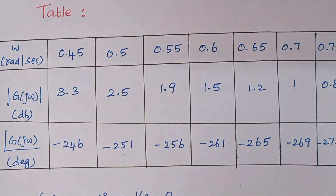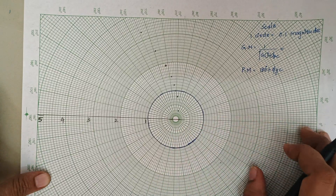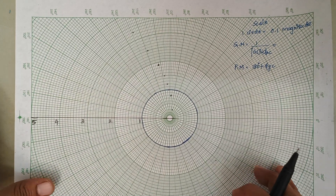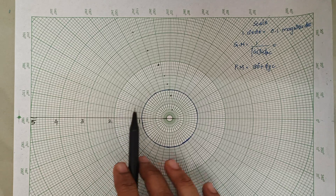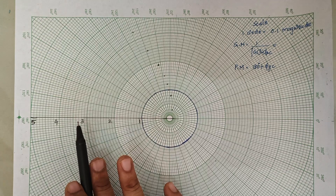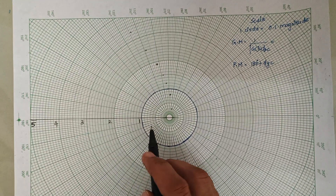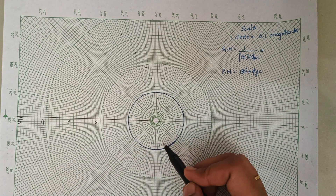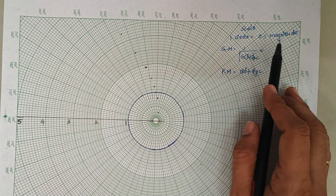Now we are going to plot these points on a polar sheet. The main thing to note is that the right side of the polar sheet should always have 0 degrees and the left side 180 degrees — this is mandatory. Depending upon the magnitude values, select values for the circles. Here I have selected circle values of 1, 2, 3, 4 and 5. You should always highlight the unity circle — the circle with magnitude 1. Writing the scale is also a must; here, one circle stands for 0.1 magnitude.